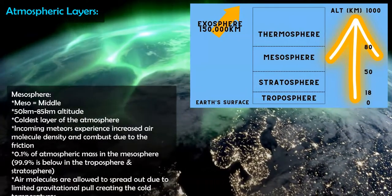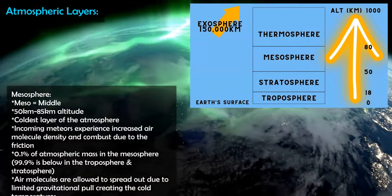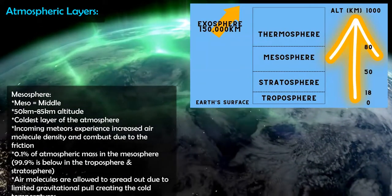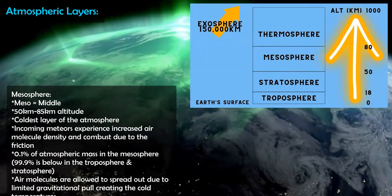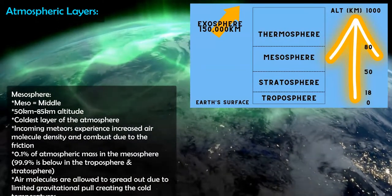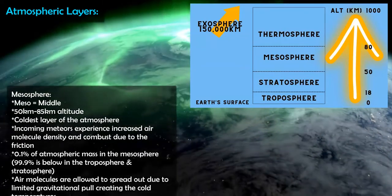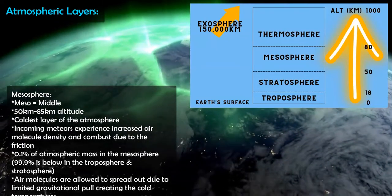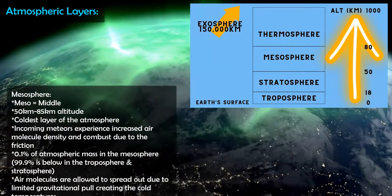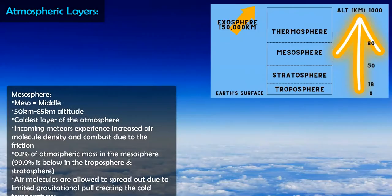Then we have the mesosphere, the middle layer — 'meso' meaning middle. This is the first layer where air molecules are concentrated enough that meteors or incoming rocks from space begin to combust due to friction with the air molecules. The mesosphere extends from about 50 kilometers altitude up to about 80 to 85 kilometers, and it is also the coldest layer of the atmosphere.